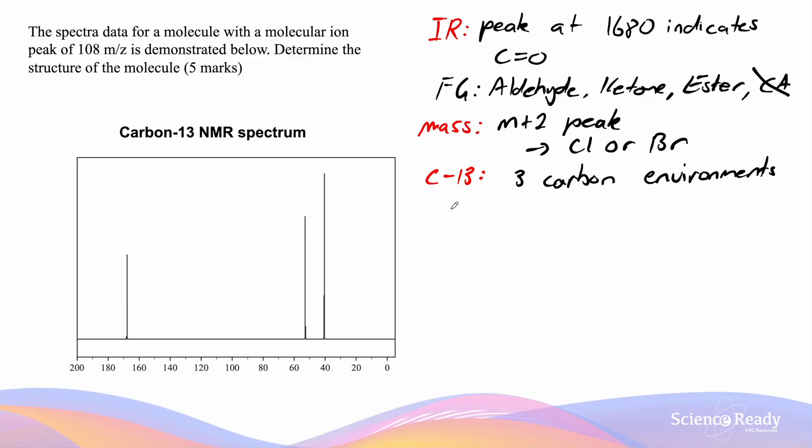So our possible general formula are CnH2n-1OX where X is a halogen, or it could be CnH2n-1O2X where X again is a halogen. The carbon-13 NMR tells us that n must be greater than or equal to 3.